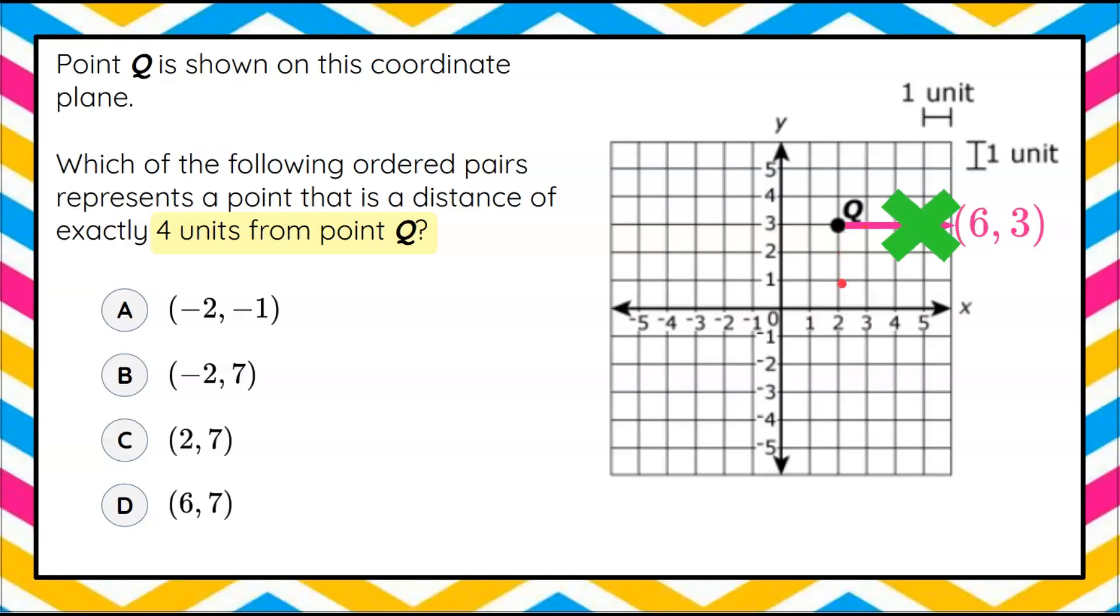Let's go down. One, two, three, four brings me to two, negative one. Right two, down one, two, negative one. I see negative two, negative one, but not two, negative one. So it's not four units down.